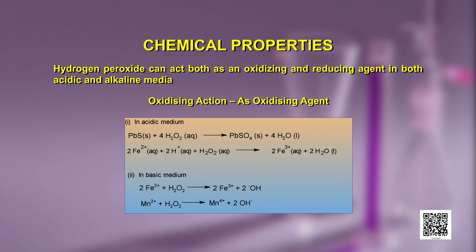As an oxidizing agent, it oxidizes in acidic medium as well as in basic medium. In acidic medium, it oxidizes lead sulfide to lead sulfate and in the process gets reduced to water. In a second example of acidic medium oxidation, it oxidizes Fe²⁺ ions to Fe³⁺ ions and gets reduced to water. In basic medium, the same oxidation of Fe²⁺ to Fe³⁺ yields 2 hydroxide ions in the products by the reduction of H₂O₂.